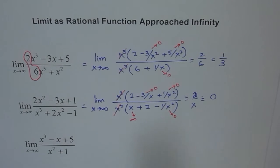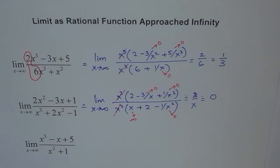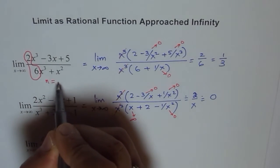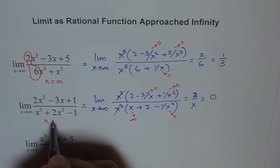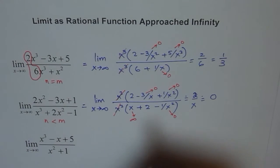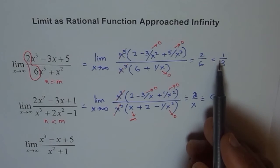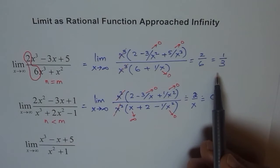What we note here is: if the degree of the numerator is less than the degree of the denominator, then we always get 0 as our limit, and the horizontal asymptote is y equals 0. For the previous example where n equals m, the horizontal asymptote will be y equals 1 over 3.